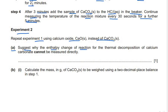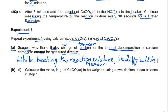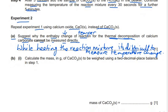Sub-question (a): suggest why the enthalpy change for the thermal decomposition of calcium carbonate cannot be measured directly. We already know this is a thermal decomposition, meaning we need to heat continuously during the reaction. The reason is that while heating the reaction mixture, it is difficult to measure the temperature change — and for enthalpy change we need to measure the temperature change.